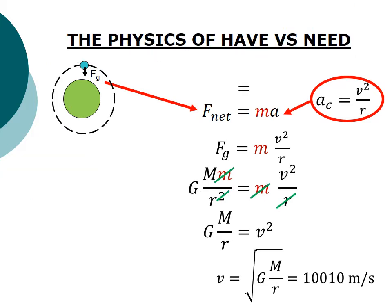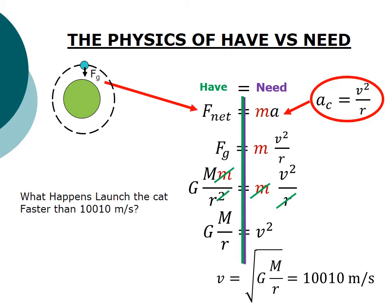Let's look at the physics of the have versus the need now. So on this side, I have force of gravity that is supplying the force inwards. And on this side, I have this centripetal force that is calculating how much I need to go in a circle. Now we've set it so that the two were equal when we solved. We said F_net equals ma. And we force these two to be equal because we know it's going to go in a perfect circle. That's how we found the speed of about 10,000 meters per second.